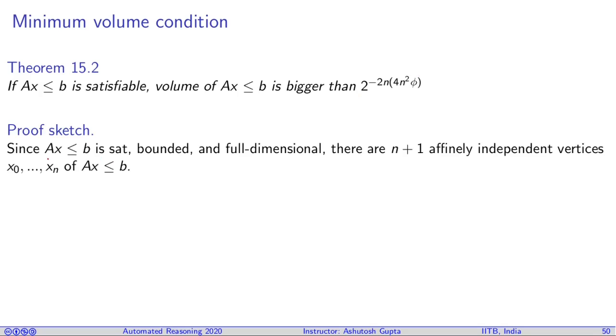Since I am assuming this is satisfiable, bounded, and full-dimensional, there must be n+1 affinely independent vertices x₀,...,xₙ of Ax ≤ b. Let us look at two-dimensional. Suppose you have this polytope, and in this two-dimensional space, you can find three points, three corners, such that they are affinely independent, meaning in the two-dimensional space they do not fall in a straight line. They cannot be projected on a smaller subspace. They form this triangle.